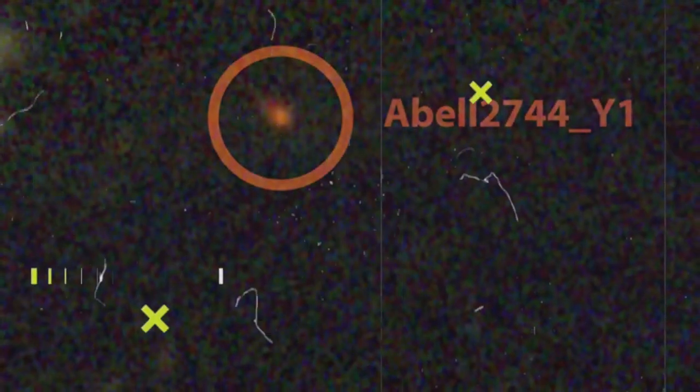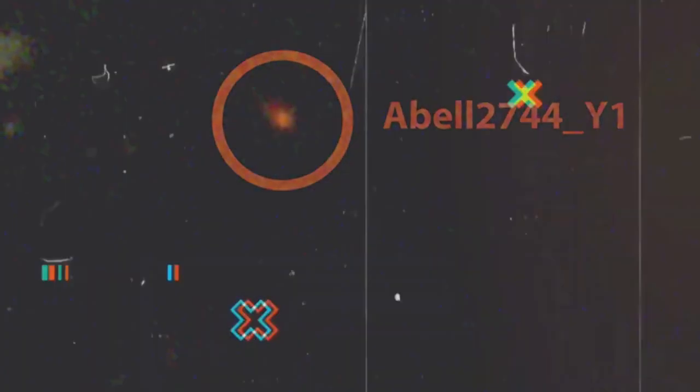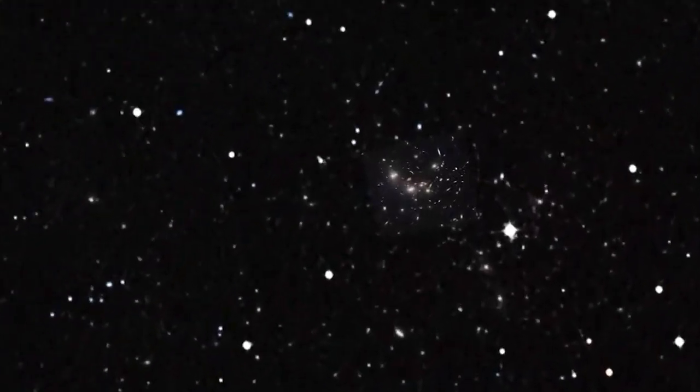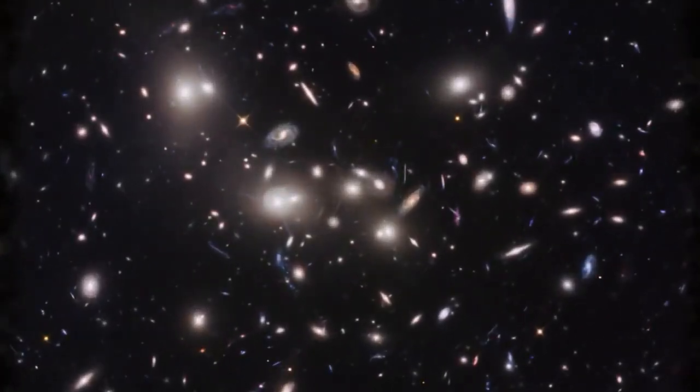Another fascinating galaxy, Abel 2744Y1, was uncovered by the JWST. Located roughly 12 billion light-years away, this galaxy features prominently in the JWST's findings.